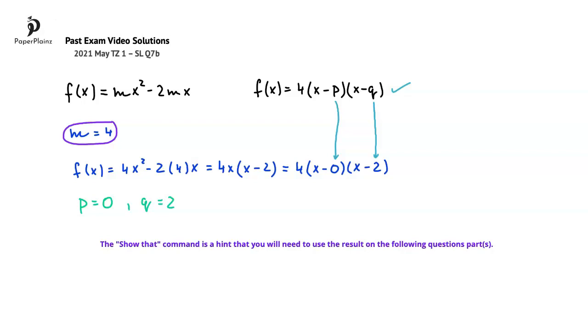Part a in this question is relatively long and quite difficult, but even if you're unable to solve part a here, you can still use the given result, so m equals to 4, in question part b to get the two marks.